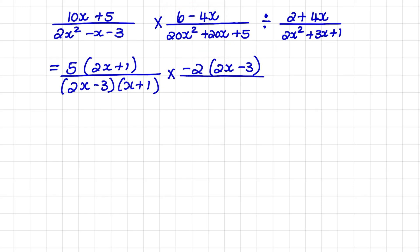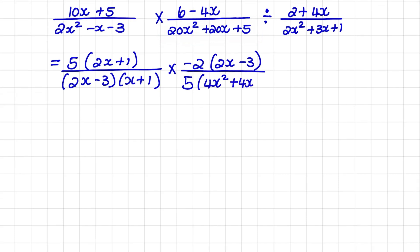Moving on to the denominator. Again, I can take out a greatest common factor of 5. So if I take out 5, I'm left with 4x squared plus 4x plus 1.